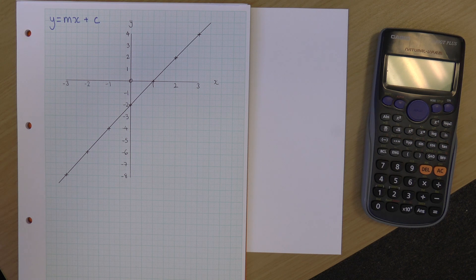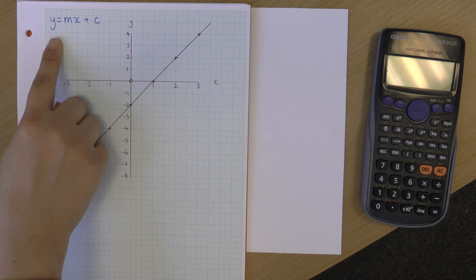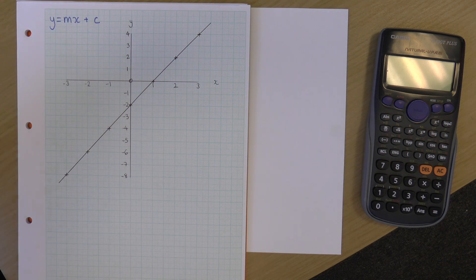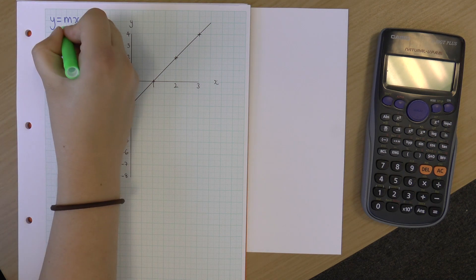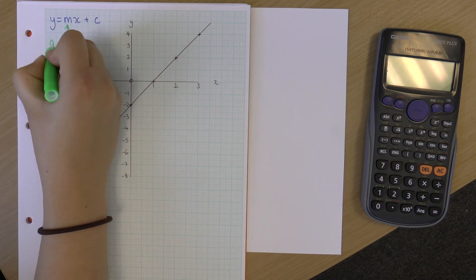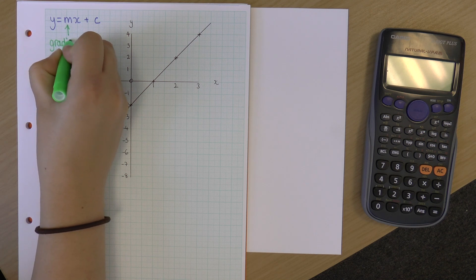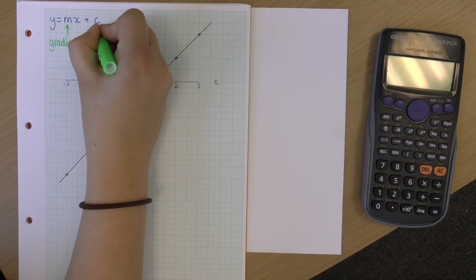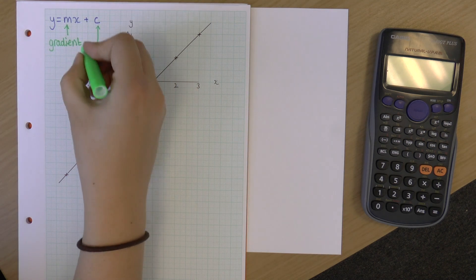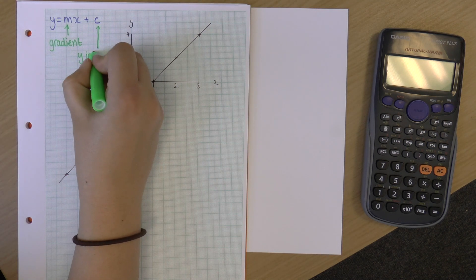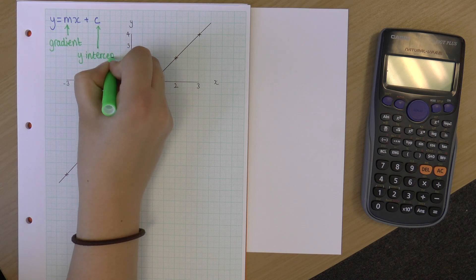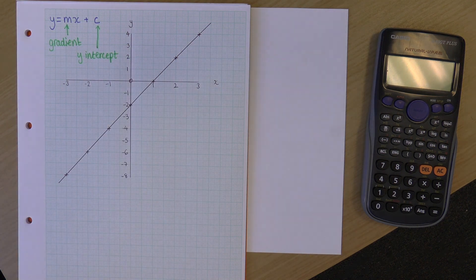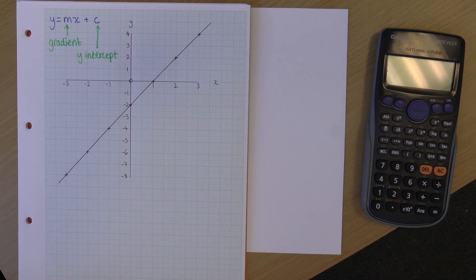The equation of a straight line graph is always in the format y equals mx plus c, where m is our gradient, or how sloped this line is, and c is what we call the y-intercept.